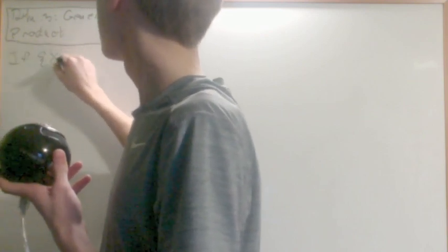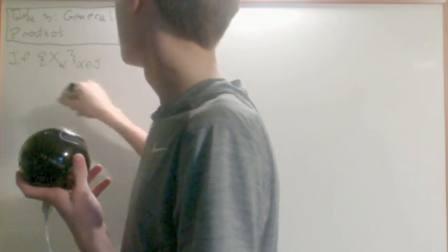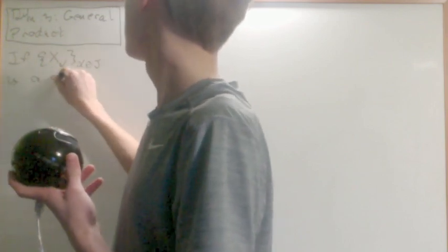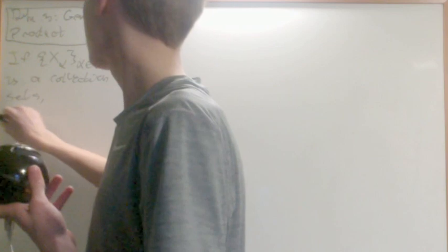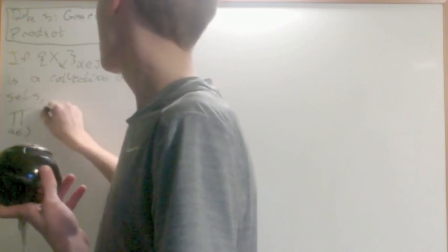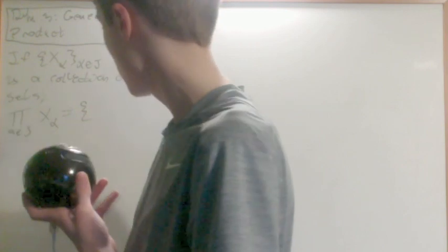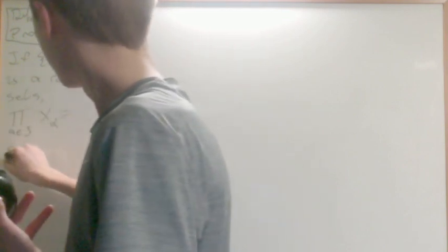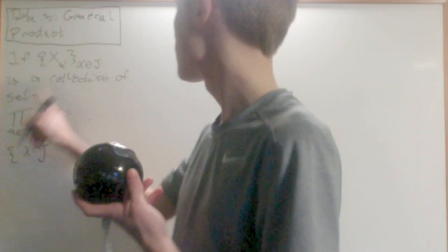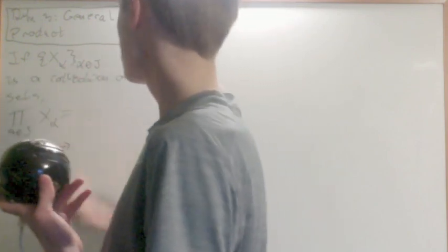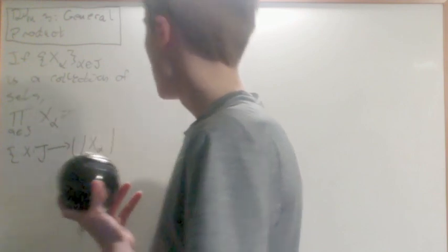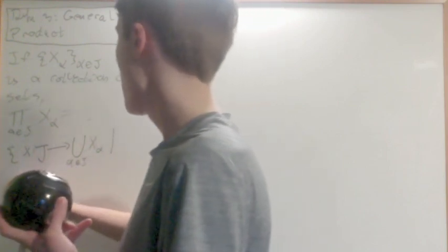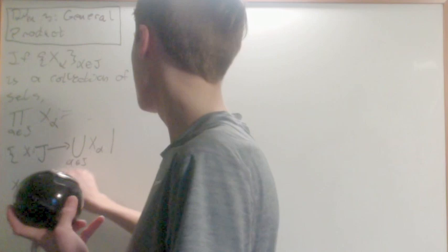If x alpha for alpha in J is a collection of sets, the product for alpha an element of J of x alpha is going to be equal to the set, and now it's going to be sort of weird, it's going to be the set of the functions x that bring you from the index set J that I'm using right here into the union of all the x alphas for alpha in J, such that x of alpha is an element of x alpha.